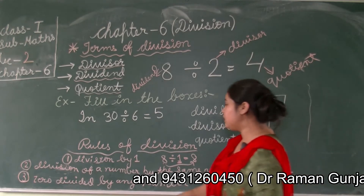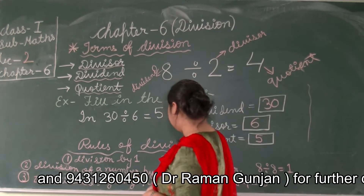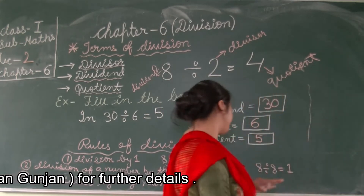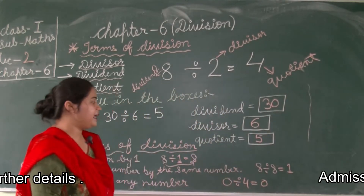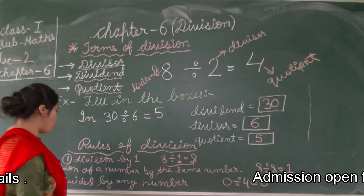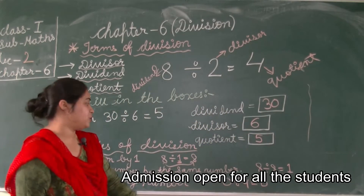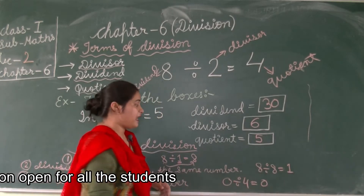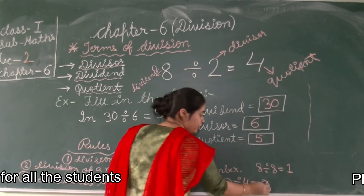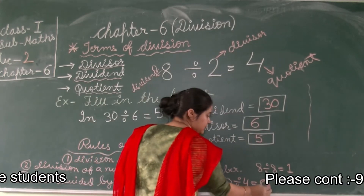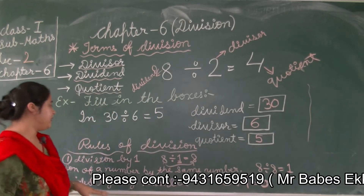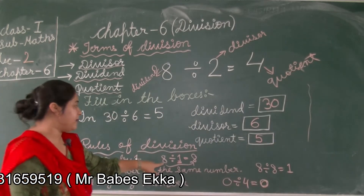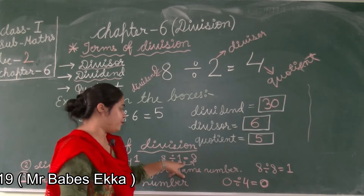The last rule is zero divided by any number. If zero is divided by any number, then our answer will be zero. So rule three: zero divided by any number gives zero as the result.